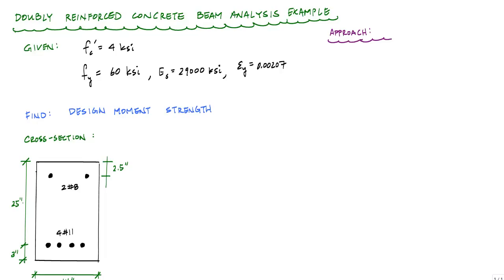In this video, I'm going to do an example problem showing you how I like to analyze reinforced concrete beams that are doubly reinforced, meaning there's steel on the tension side and the compression side. In this problem, I'm given a concrete ultimate compressive strength of 4 KSI, grade 60 steel, modulus of elasticity, and the strain at yield. What we want to find is the design moment strength, phi times MN, or the phi times the nominal moment strength of this reinforced concrete section.